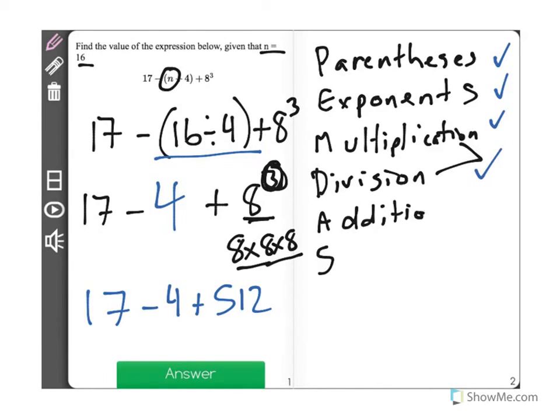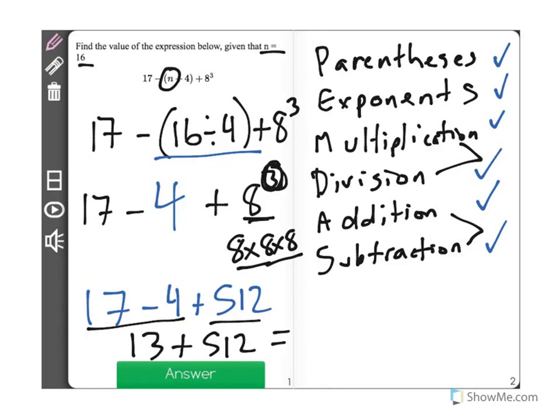which is addition and subtraction, and once again, together from left to right. I don't solve addition first or subtraction first. I just solve them together from left to right. So I have 17 minus 4 is 13 plus 512. When I add those two together, I get the answer of 525.